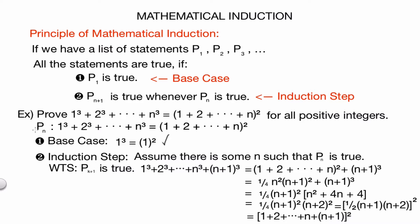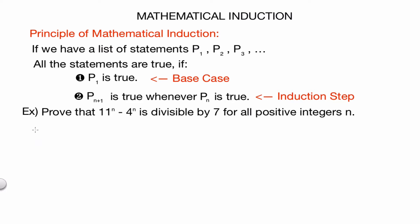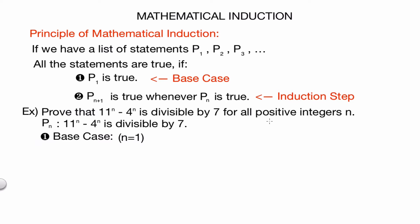Let's look at another example. In this example, we want to prove that 11ⁿ − 4ⁿ is divisible by 7 for all positive integers n. Our statement p_n is that 11ⁿ − 4ⁿ is divisible by 7. First we want to show the base case. Since it says for all positive integers n, the least case is n = 1. I want to point out this doesn't always have to be n = 1; if the claim were for all integers n ≥ 3, the base case would be n = 3. Here the base case gives 11¹ − 4¹ = 7, which is clearly divisible by 7.